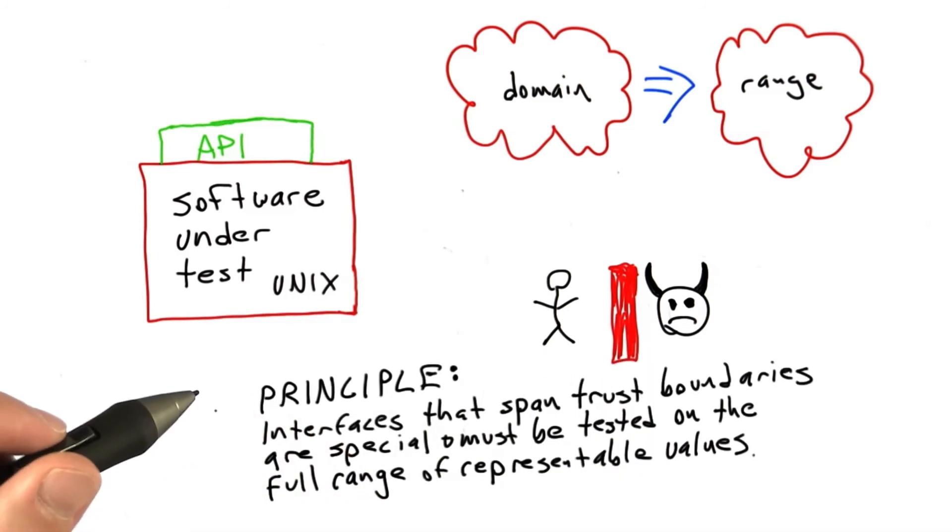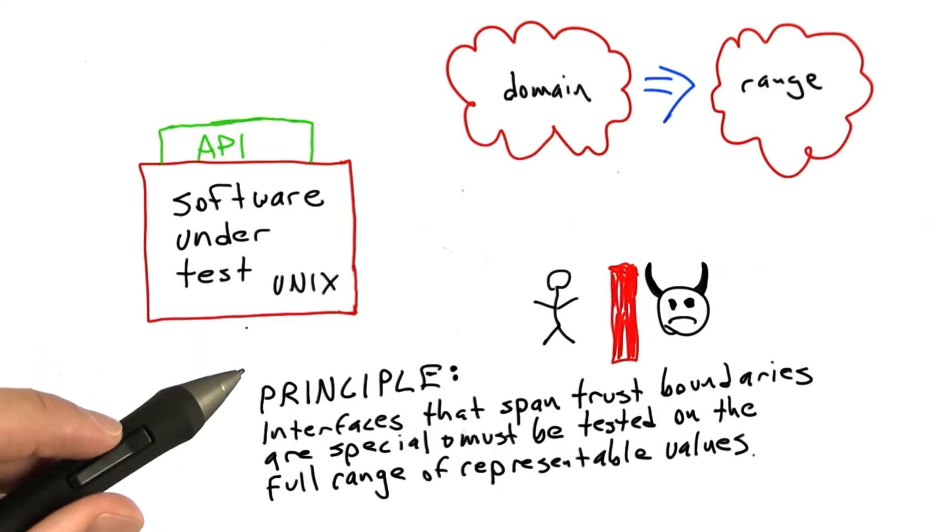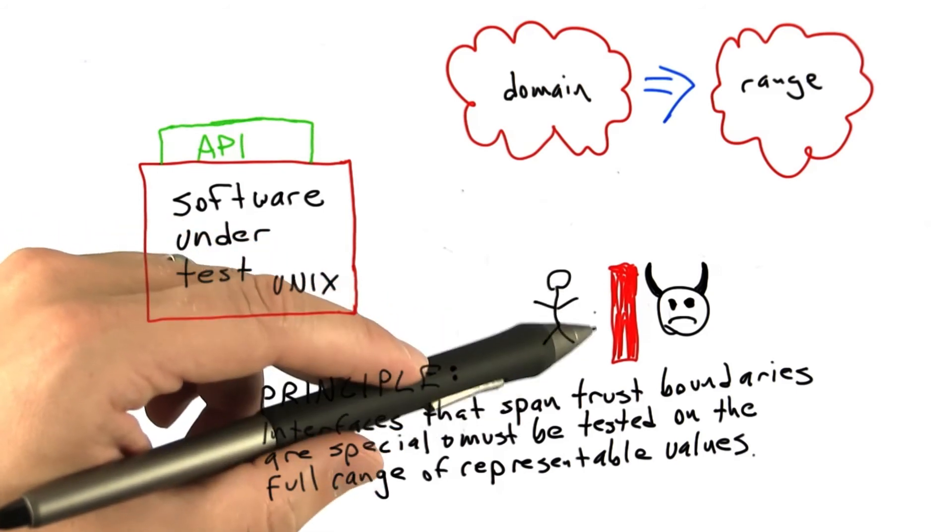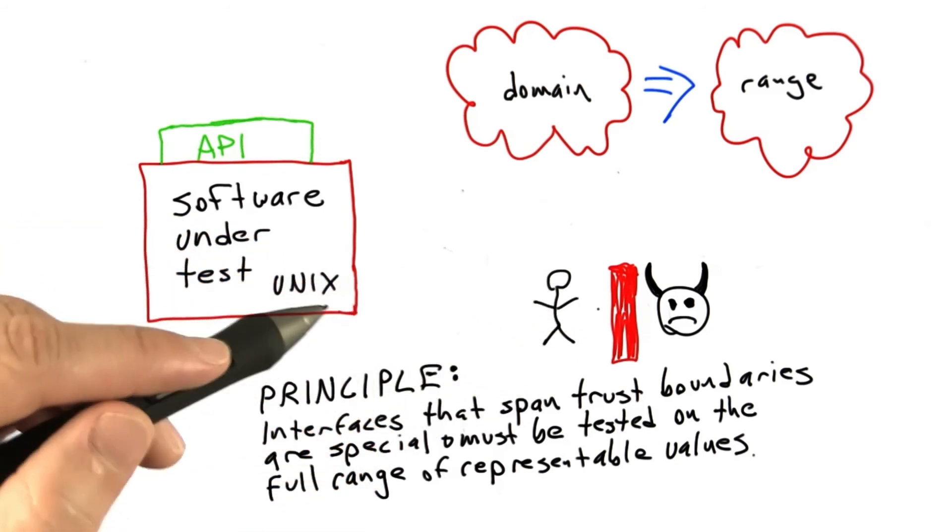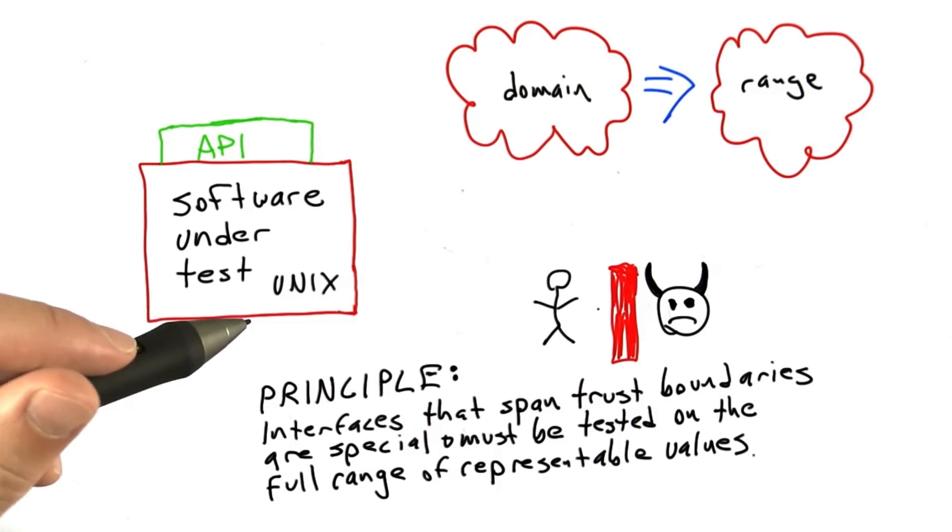It turns out that in practice, people are pretty bad at this. That is to say, people aren't empirically very good at testing these interfaces with a full range of values. This lies at the core of a lot of the security vulnerabilities that we see in real software today.